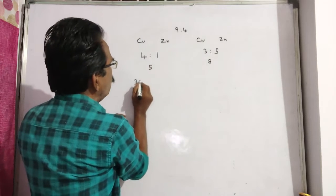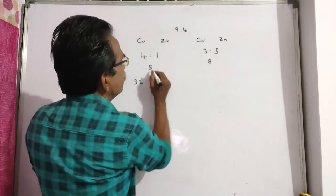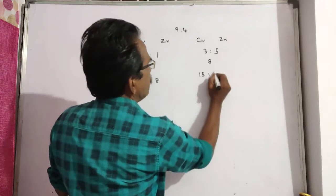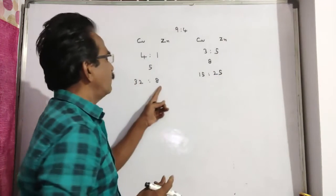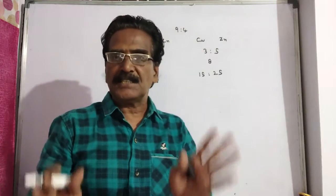8 times 4 is 32. 8 times 1 is 8. 5 times 3 is 15. 5 times 5 is 25. So this is 40 parts. This is 40 parts. Now the quantities are made equal.